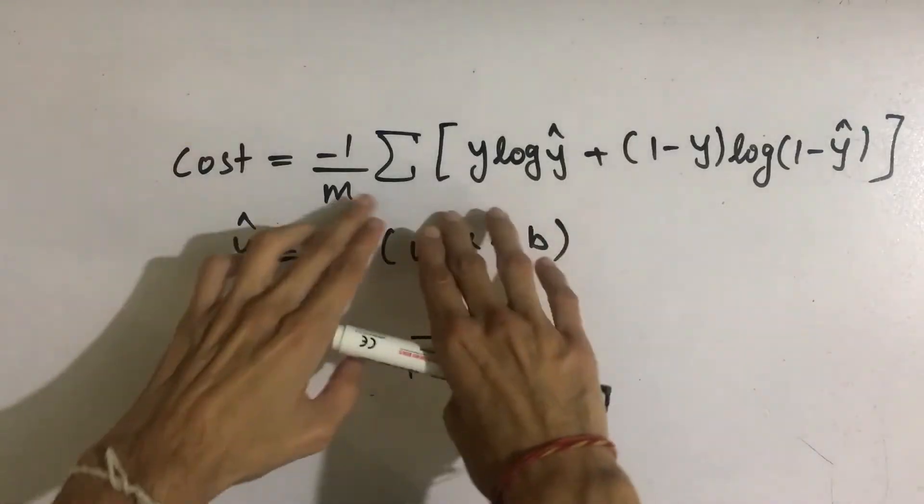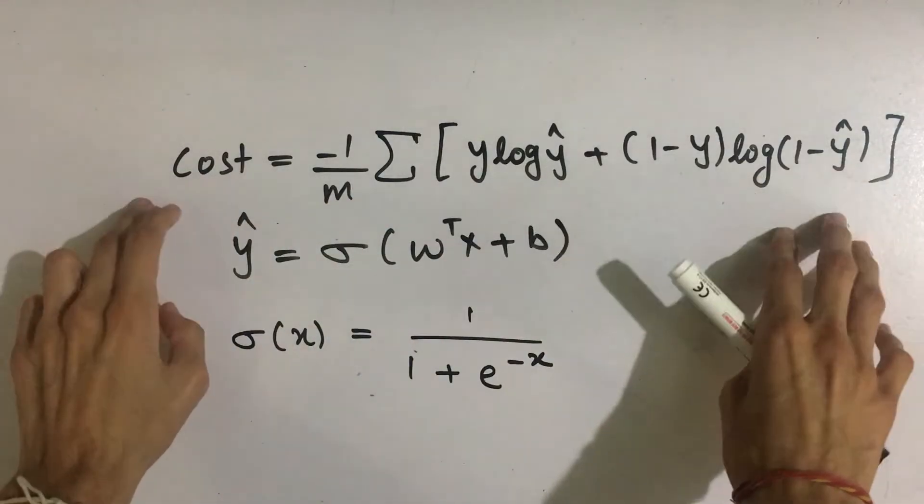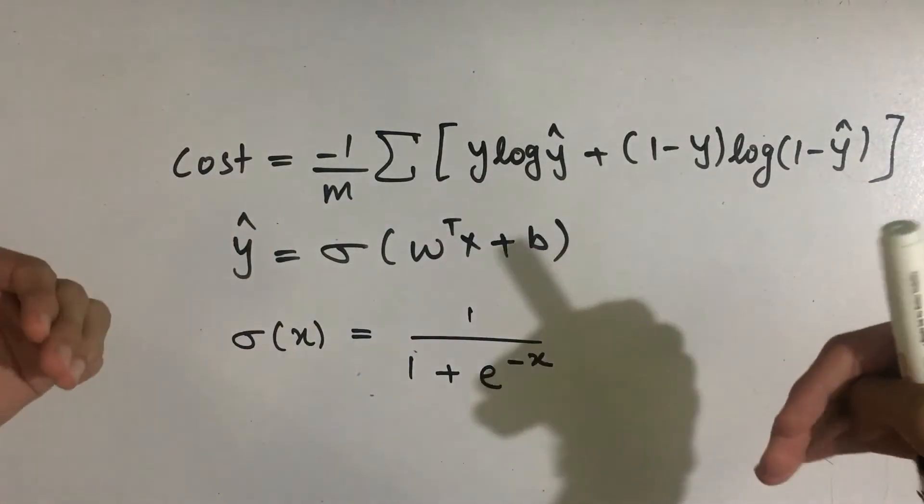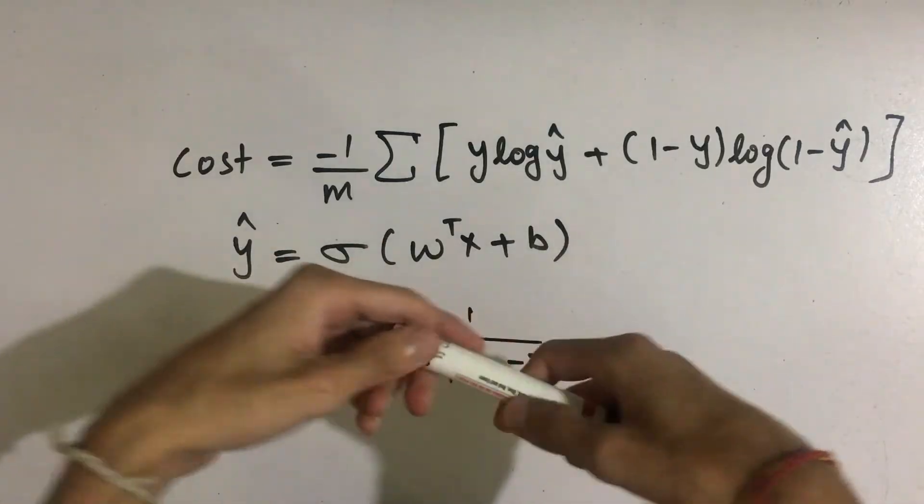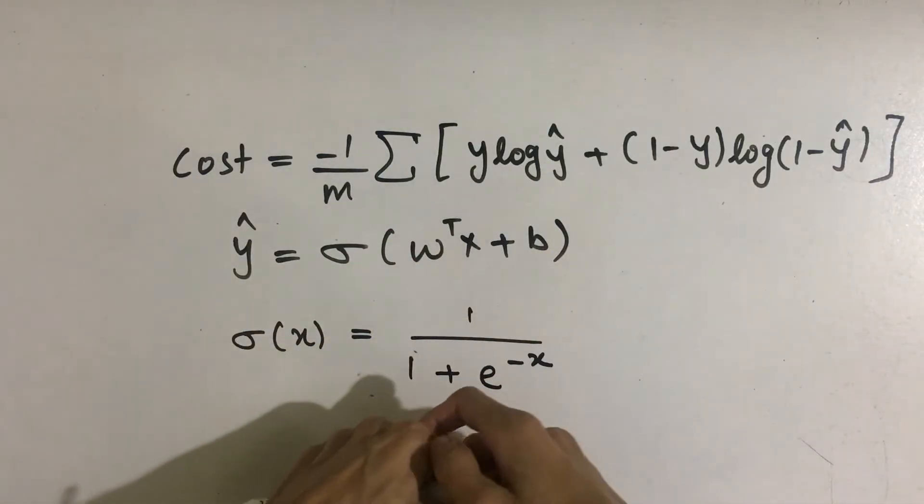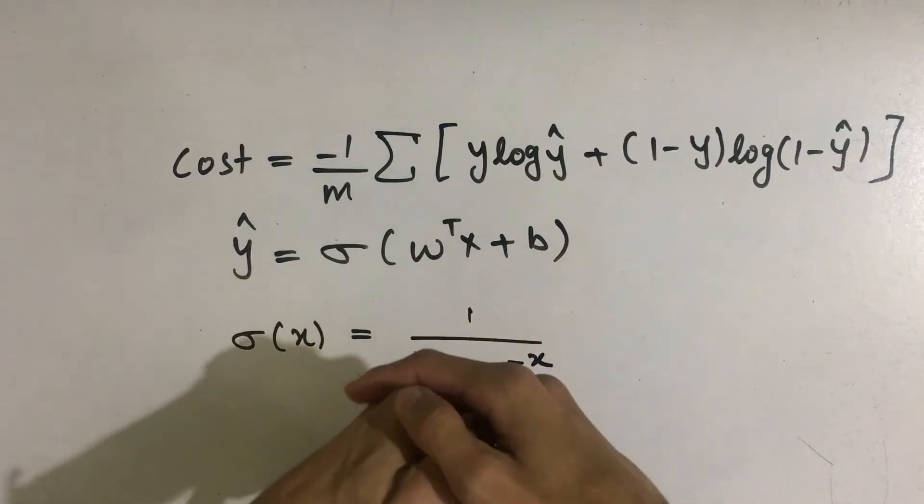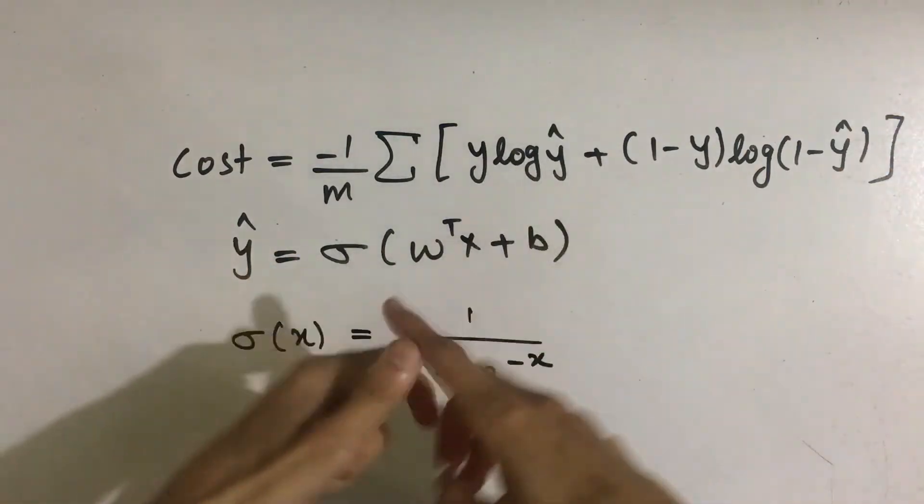Now this is the formula for the cost function in logistic regression. Cost function is nothing but just the error representation that we use in machine learning. And if you do not know anything about cost function for logistic regression,